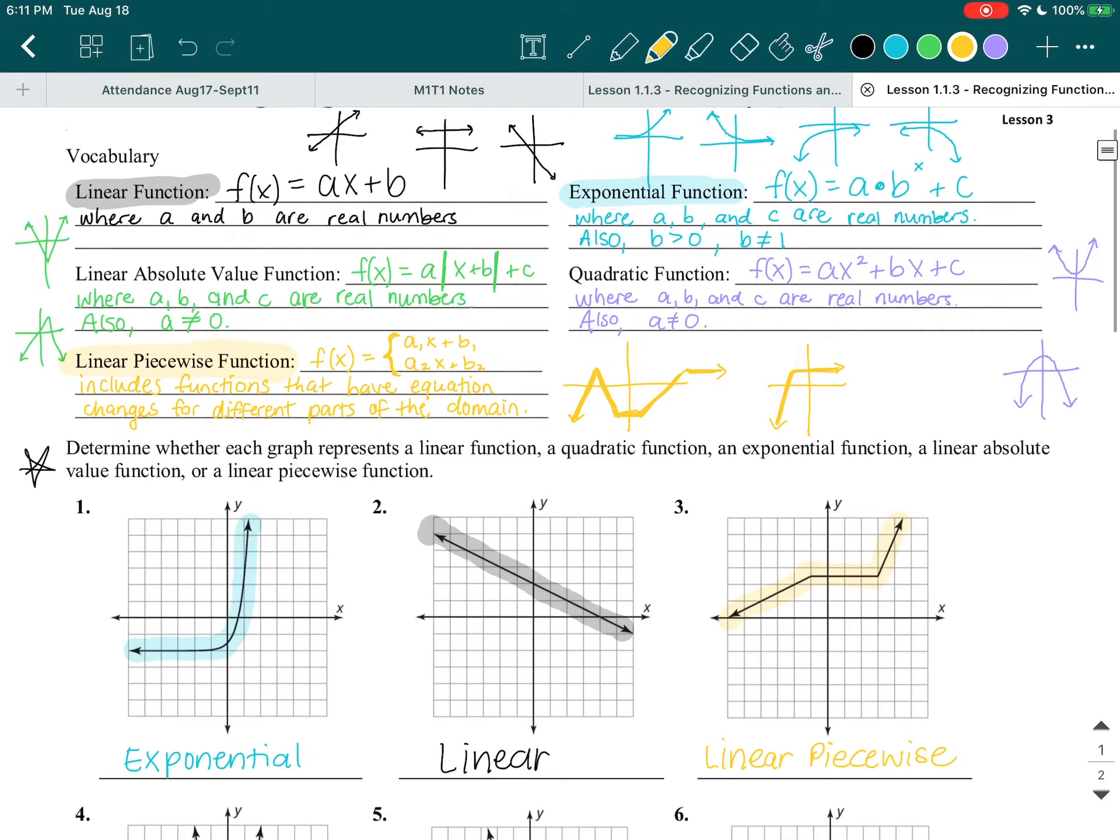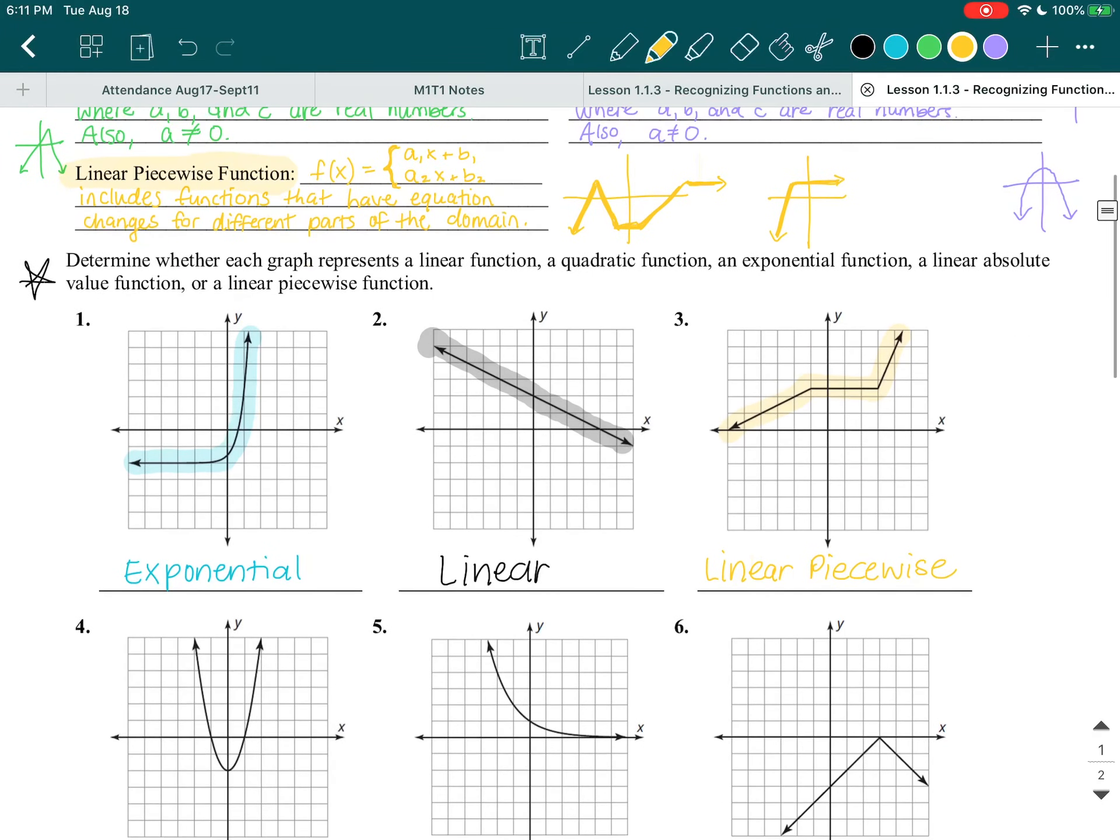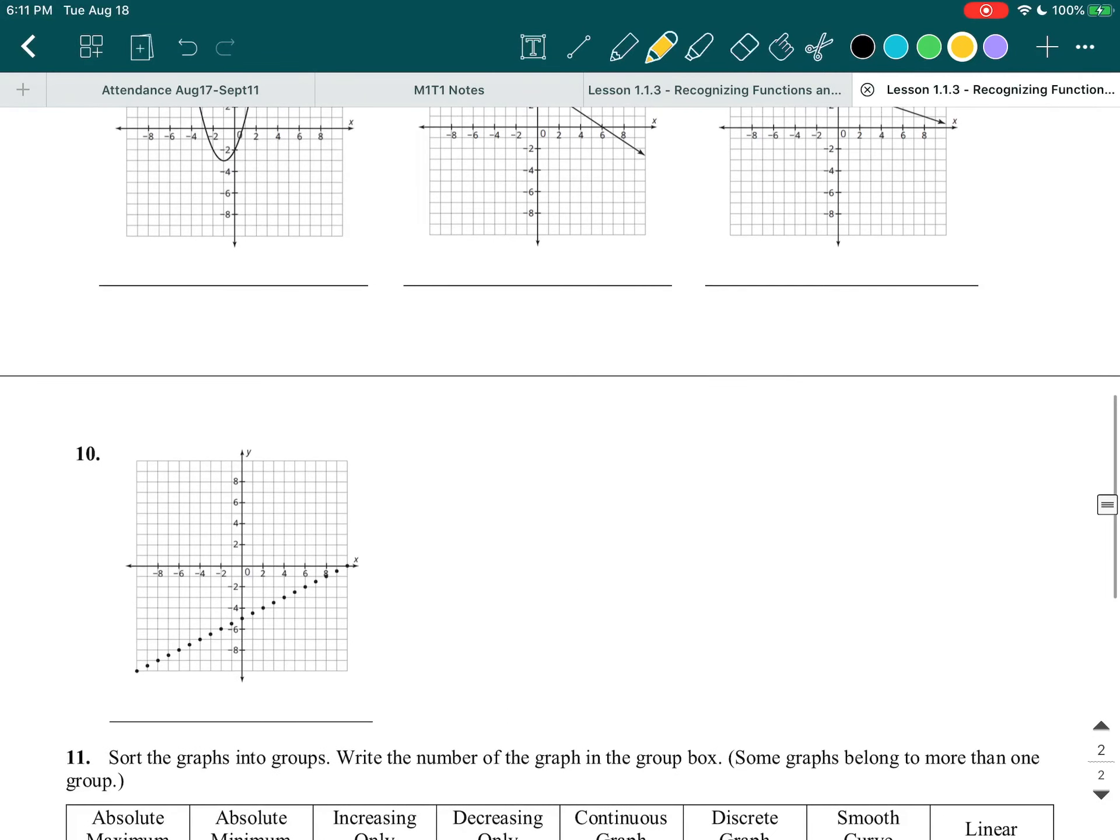And that's it for these examples. I want you guys to try to identify the rest of these problems on your own, and then we'll get back together. Oh, for number 10, I know it's a lot of dots, right? But here's how I want you to think of it. If you connect the dots, then which type does it look like?